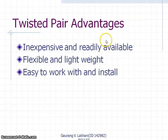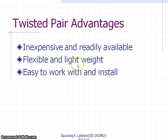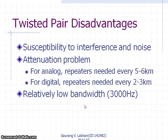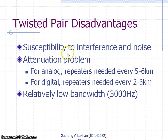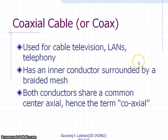Twisted pair advantages: they are inexpensive — especially Category 3 — readily available, flexible, lightweight, and easy to work with and install. The disadvantages include attenuation problems, relatively low bandwidth, and susceptibility to interference and noise.